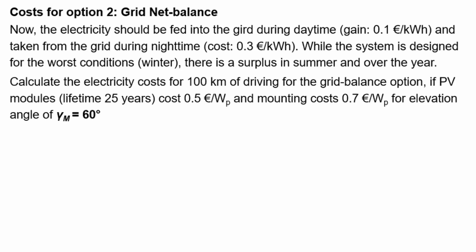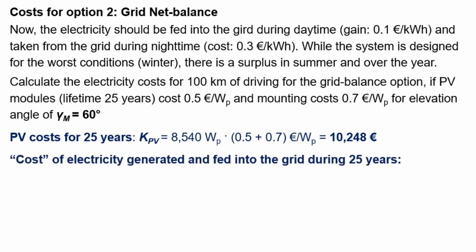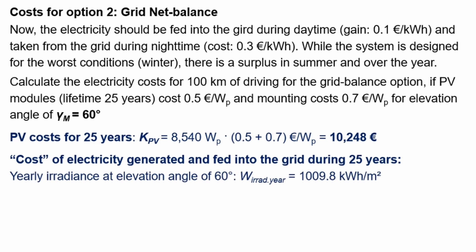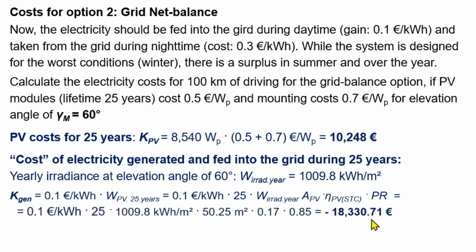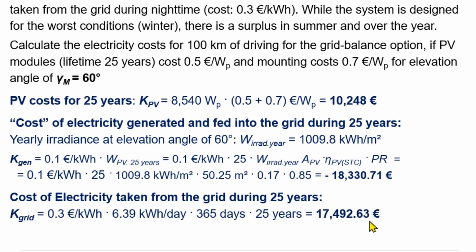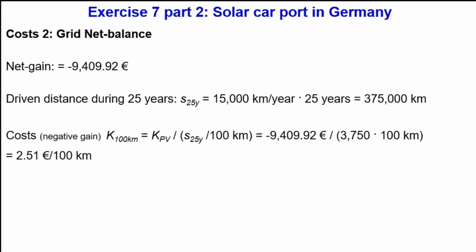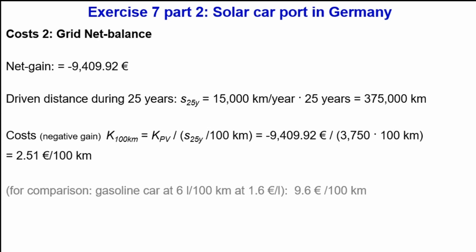That was calculated already. So we go quickly over it: the PV generator is a bit smaller, but mounting costs are a bit higher at 60°. The gain from the utility is 18,330.71 € over 25 years. The electricity costs from the grid are the same. Altogether we have a slightly negative gain — we still pay a bit more — but compared to a gasoline car it makes complete sense to incline the modules more steeply.